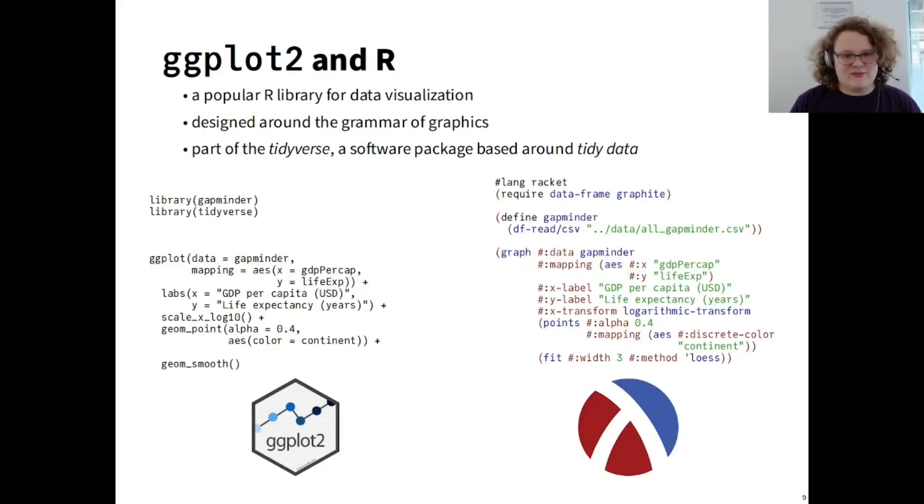So where did this philosophy come from? Graphite is heavily inspired by the library GGplot2, a wildly popular R library for data visualization. GGplot2 is designed around the grammar of graphics, a philosophy that gives you the ideas presented before you, like aesthetic mappings or additive renderers. In addition, GGplot2 is part of the Tidyverse, a software package based around tidy data. Making assumptions about this language of data allows us to abstract in ways the prior work has not.